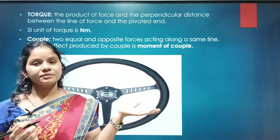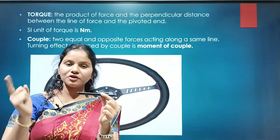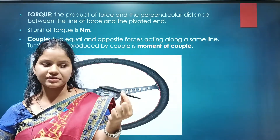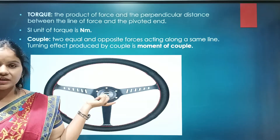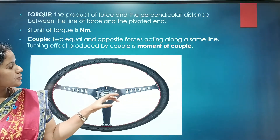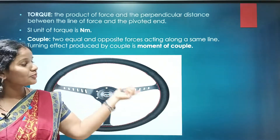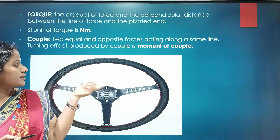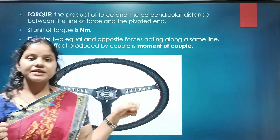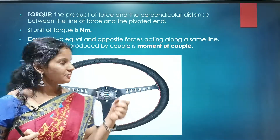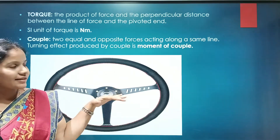What is couple? If your object has a pivot point or fixed point at the center, then a single force cannot produce motion. Consider the example of a steering wheel — the pivot point is at the center, so a single force cannot produce rotation. Therefore you need one more force to produce rotation. That is what a couple is: two forces acting equal and opposite in direction. When driving a car, you apply two forces on equal sides of the steering wheel.